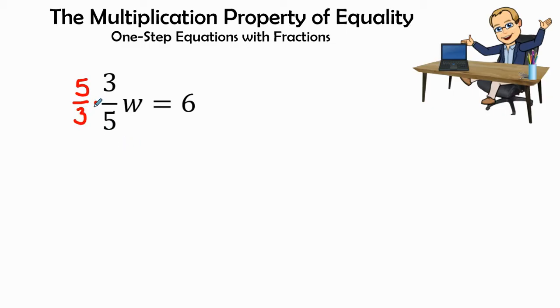Because I do it on the left side, I'm going to have to multiply by 5 over 3 on the right side. Now, this 6 is a whole number, and to make it equivalent as a fraction, I'm going to make that 6 over 1.